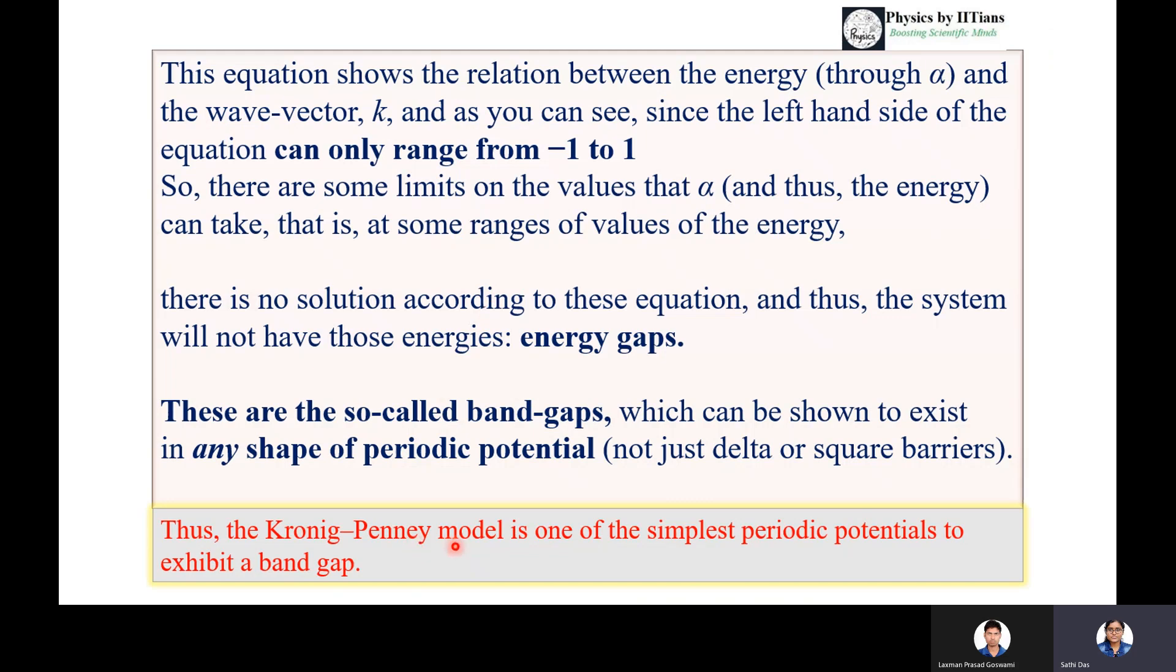So that's the Kronig-Penney model, which exists for any shape of periodic potential and can be explained with the periodicity of the crystal. This model is one of the simplest periodic potentials to exhibit a band gap.